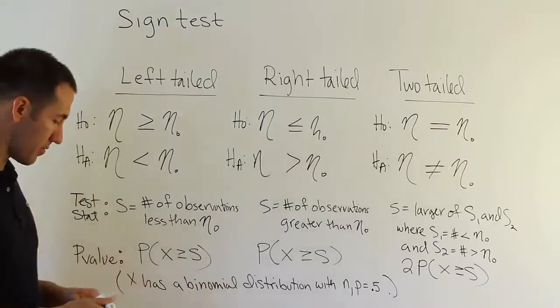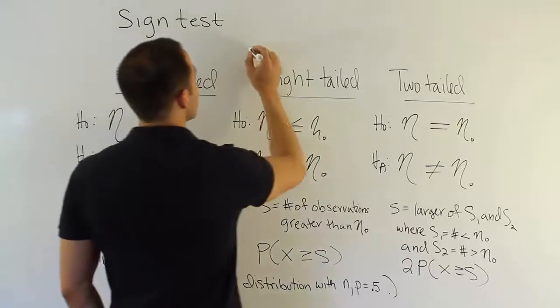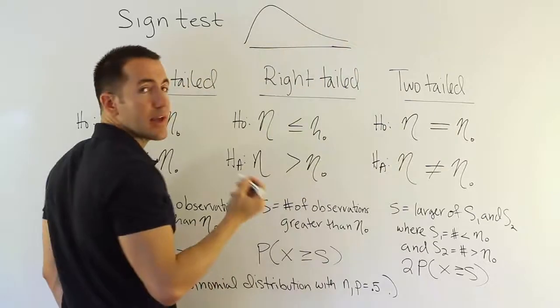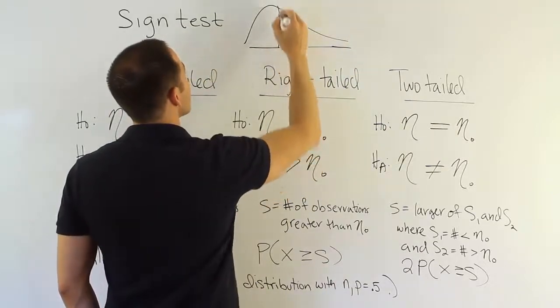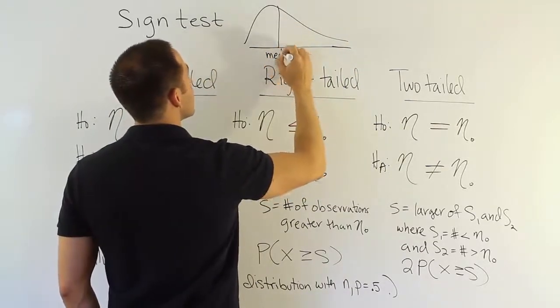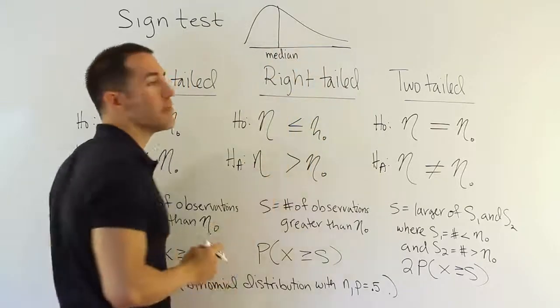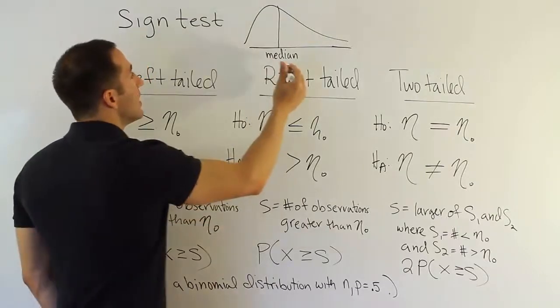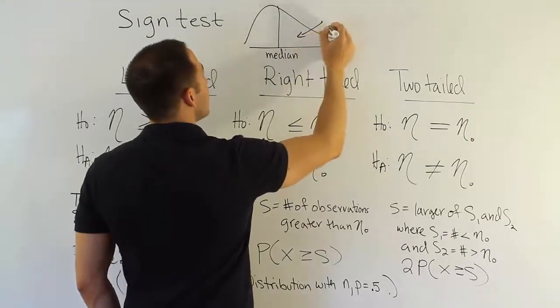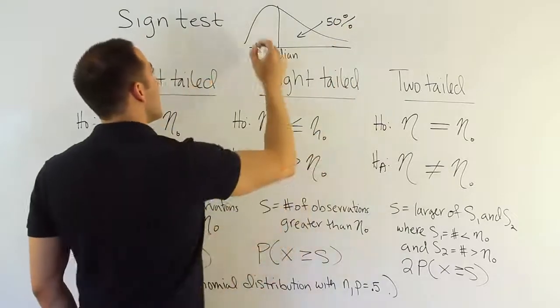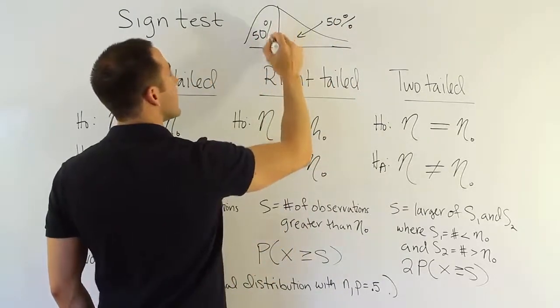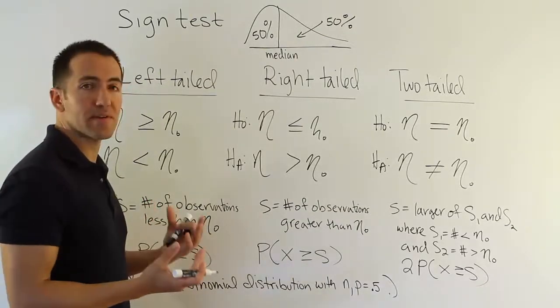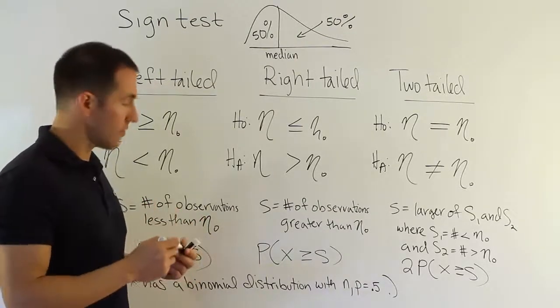Let's talk about those properties of median. If you have a distribution, even if the distribution is skewed or something like that, we would know that still, wherever the median is located, and remember the symbol for population median is eta, right? We know that 50% of the area is on the right and 50% of the area is on the left of the median. That is the definition of the median. So because of that property, we can develop a test that's pretty unique and very clever, actually.